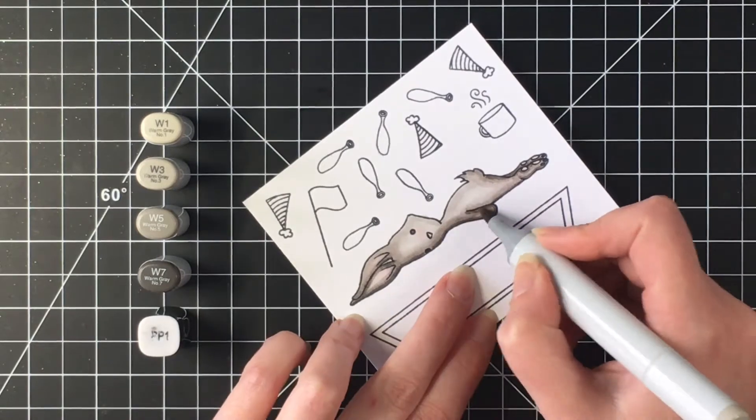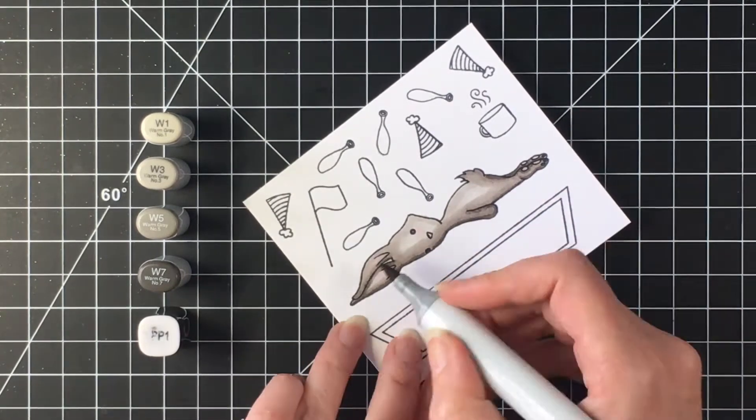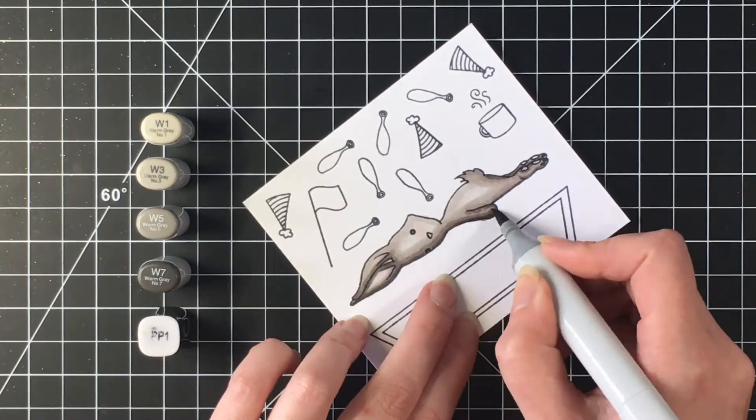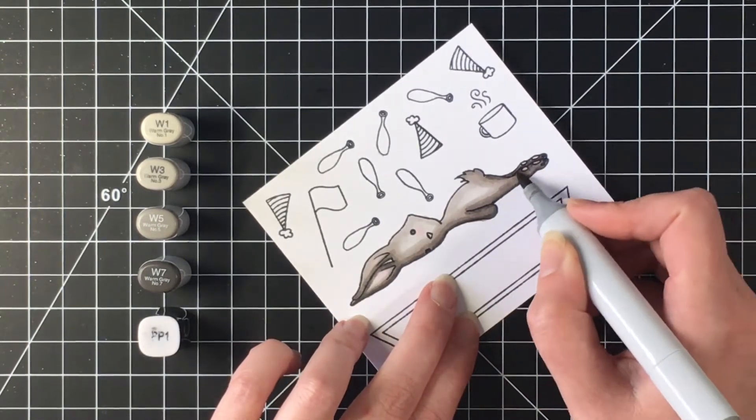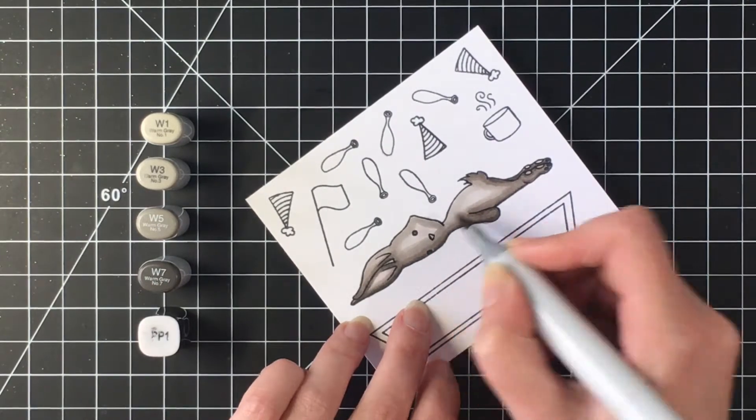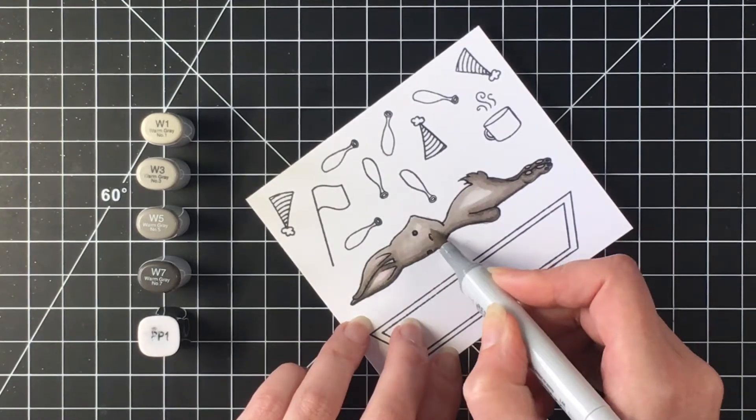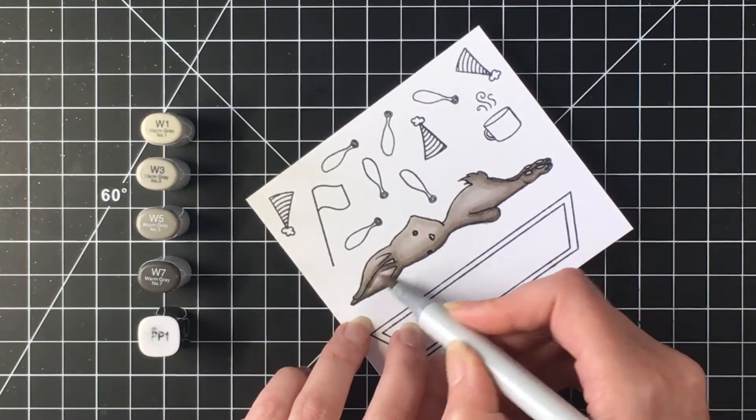And then I just felt like it needed to be a little bit darker so I'm just going back with some of the midtones and then a darker one, just so that I can get it to the color that I want it to be. So don't be afraid to go back over an image if it's not exactly how you pictured it the first time you color it.